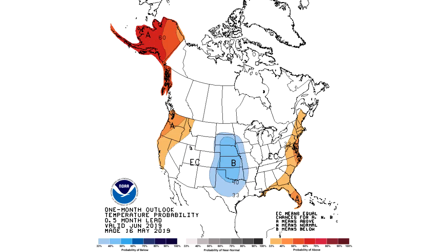Now we're going to look at NOAA's forecast, and you can see warmer on the two coasts and colder in the central United States. And one last time, here's my forecast: warmer on the two coasts, colder in the central United States. I think you guys can get the hint that basically everything is leaning towards what my forecast was.